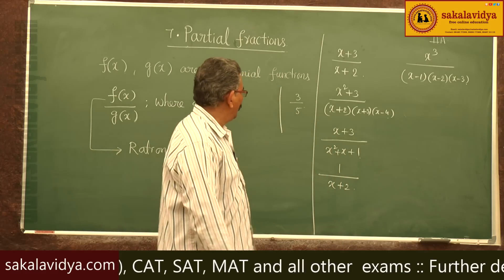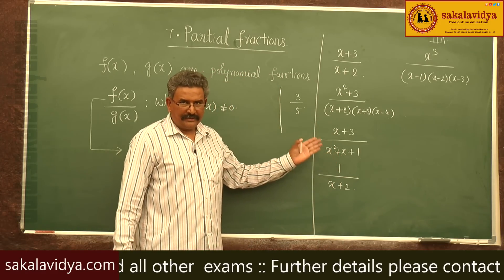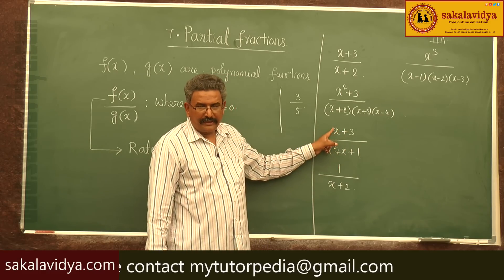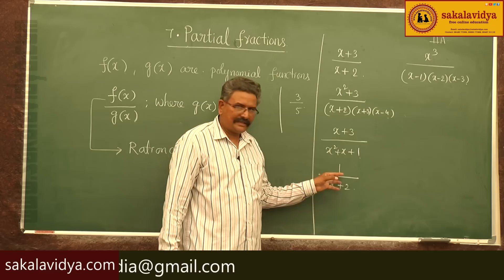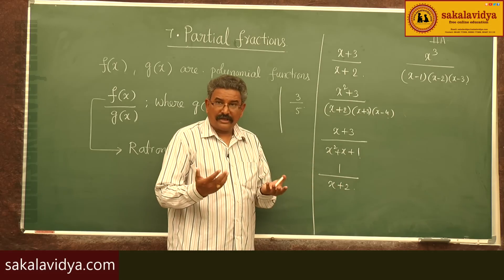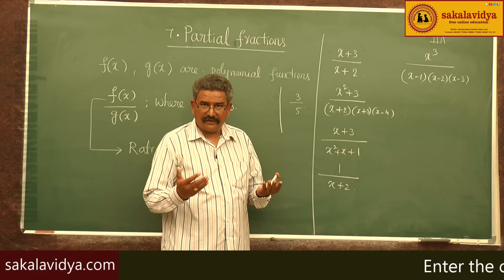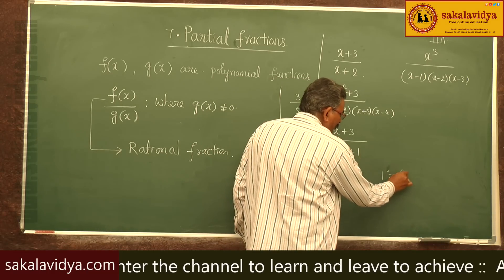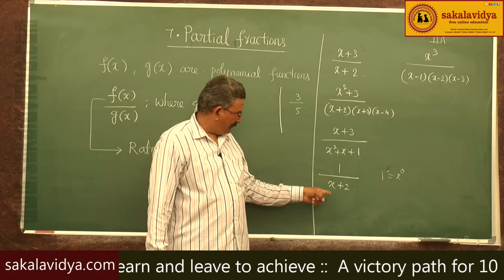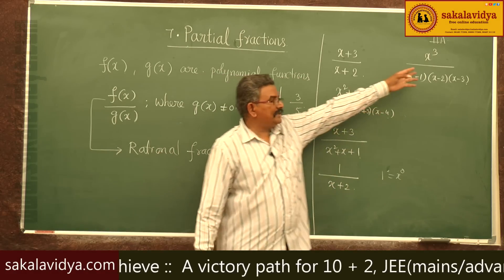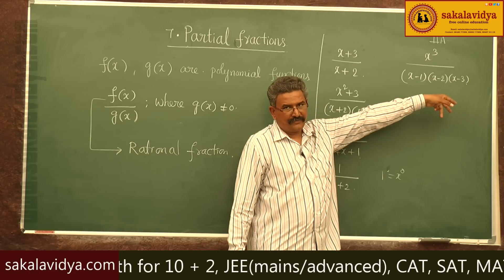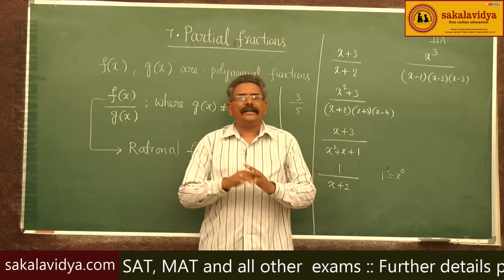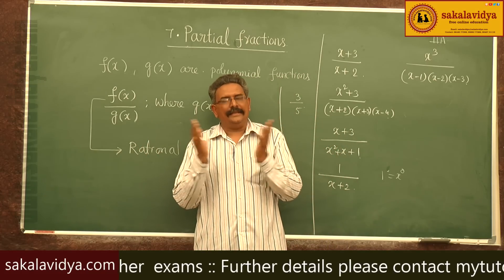Now let us take this example: degree is 1 in the numerator and degree is 2 in the denominator, so degree of numerator is less than degree of denominator. In the case of 1/(x)(x+2), the degree of 1 as a constant function: 1 can be written as x⁰, so degree is 0, whereas the denominator has degree 1. Now in the first case particularly the degrees are same. So we can divide rational fractions as per their degrees.